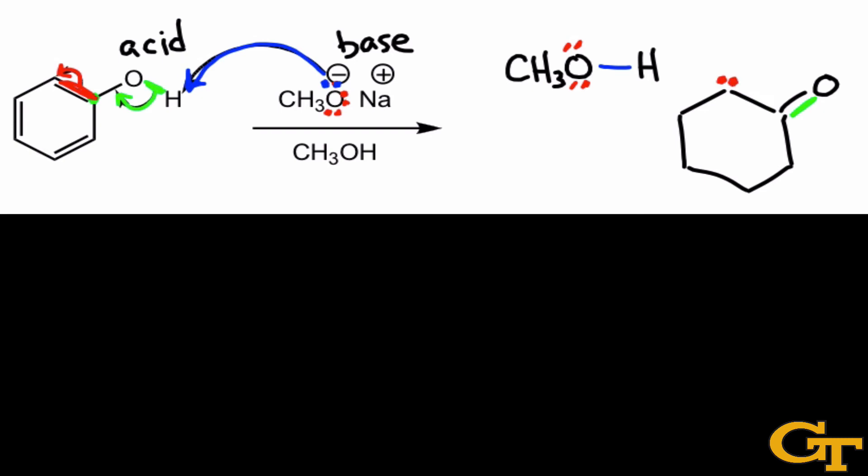Since we've converted a bond, which formerly contributed one electron to this carbon in the reactants, into a lone pair, which contributes two electrons to that atom in the products, the charge on that carbon has gone from neutral to negative one. And notice that this makes sense in terms of overall charge conservation. We started with a negative charge on methoxide in the reactants. It makes sense that there should still be a negative charge in the products, which is counterbalanced by the sodium cation, which just acts really as a spectator in this reaction.